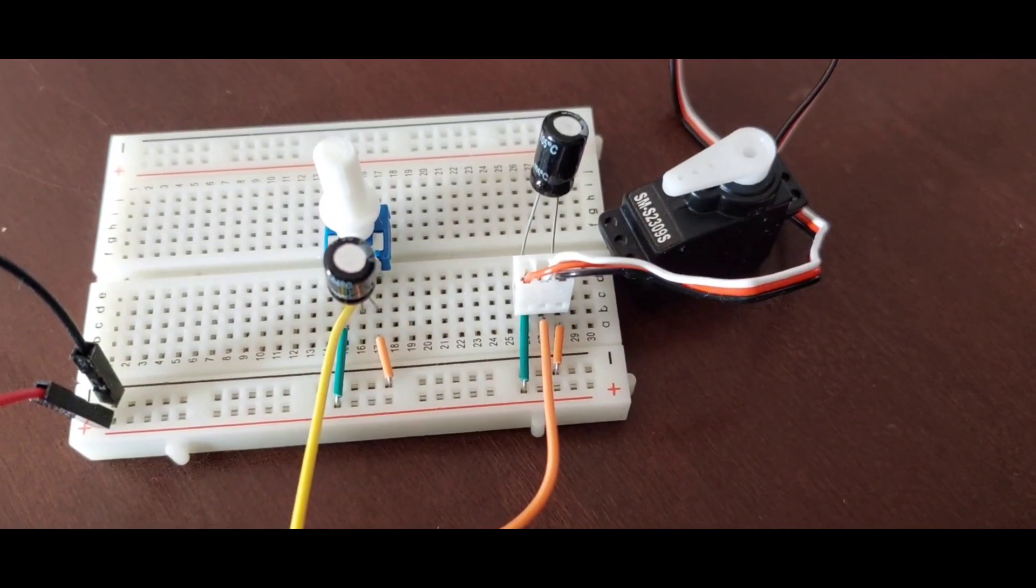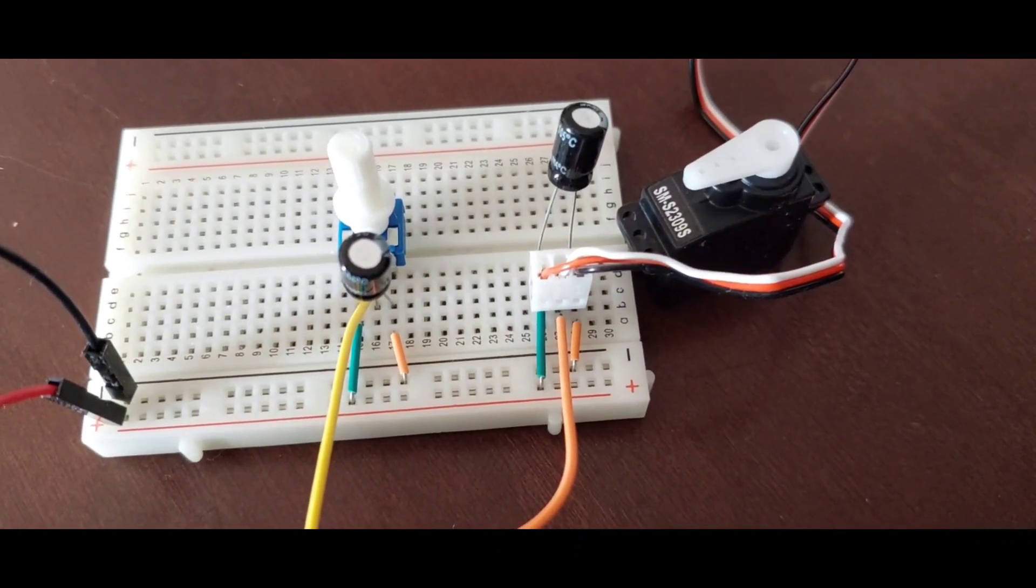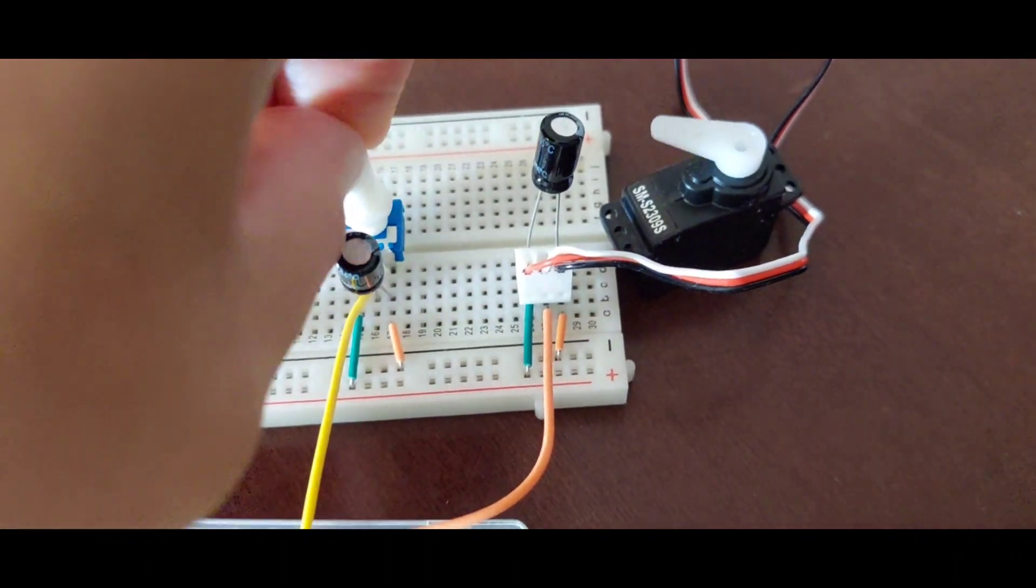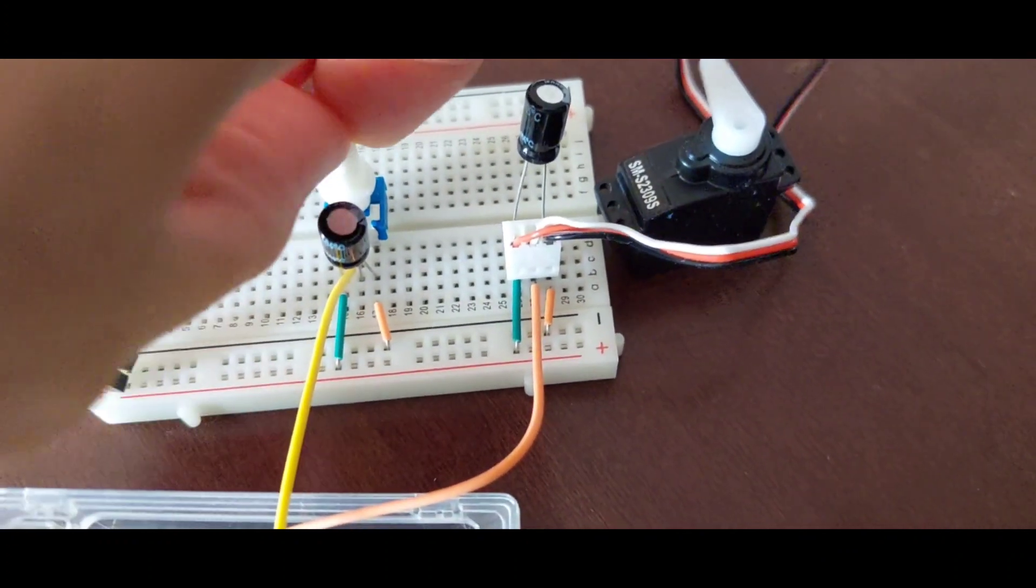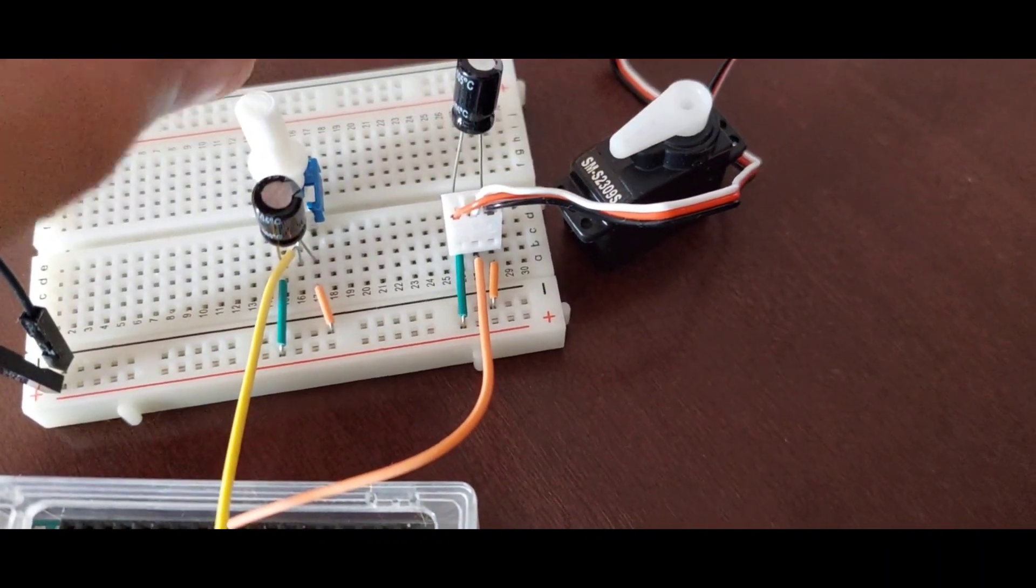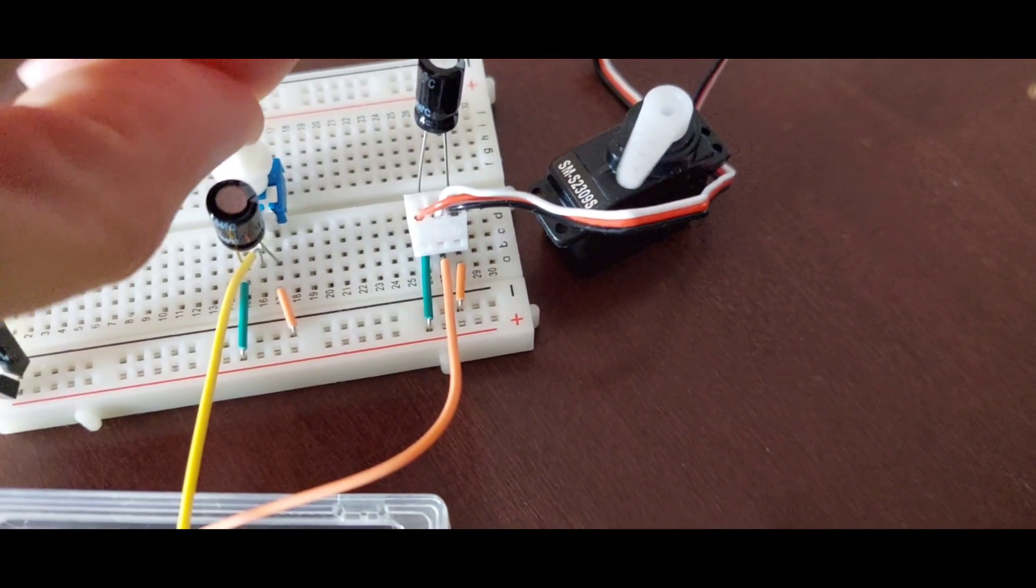Arduino starter kit project number five, the mood cue. The idea here is to use the potentiometer to change the direction in which the arm of the servo is pointing to.